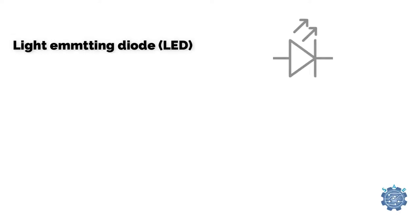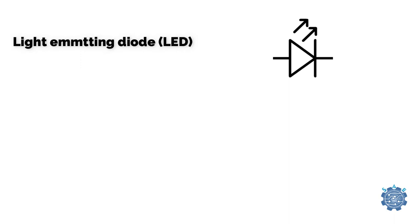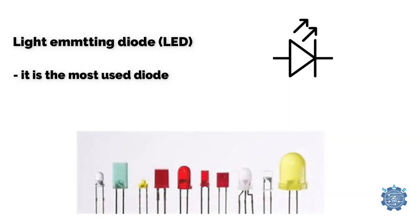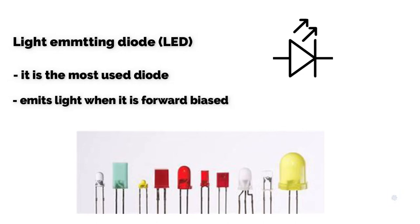Light Emitting Diode, or LED, is the most used diode and the main property is that this diode emits light when it is forward biased, or in other words converts electrical energy into light energy.